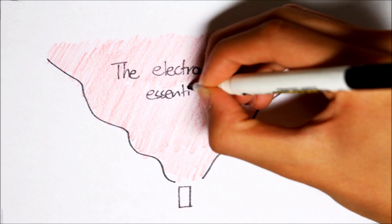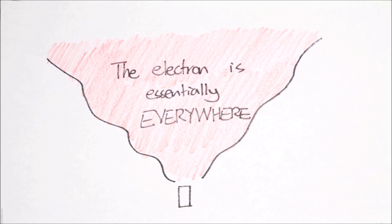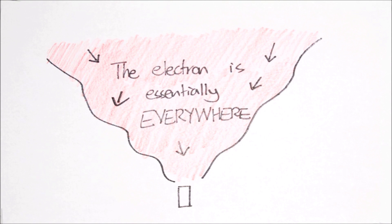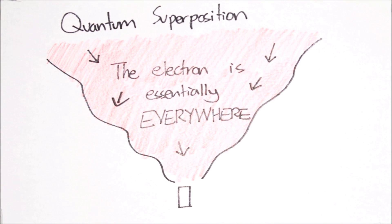So before the electron reaches the detector screen, the electron is essentially in every position it can be at the same time. The electron is here and here and here and so on, all at the same time. In quantum mechanics, we say that the electron is in a quantum superposition, meaning existing in multiple states at once.